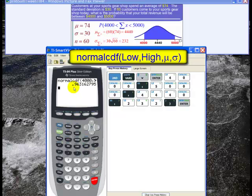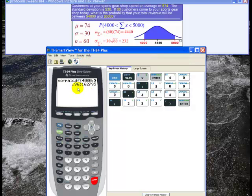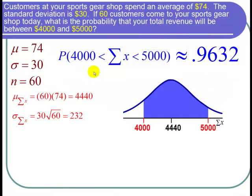The probability is 0.9632, rounded to four decimal places. Let's go back to the PowerPoint.